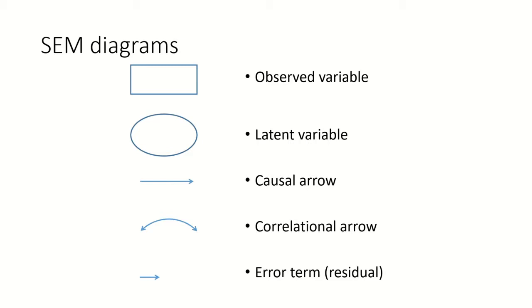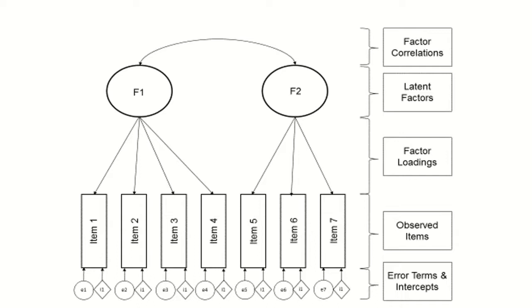So how to put all of these together? A classic confirmatory factor analysis model would look something like this. We would have, for example, two latent variables. So these are our theoretical constructs that we want to measure. We don't observe them directly, so that's why they are in these kind of ovals. So these are latent factors, and they may be correlated with each other. So we may have factor correlations. Hence, we have a double-headed arrow here.